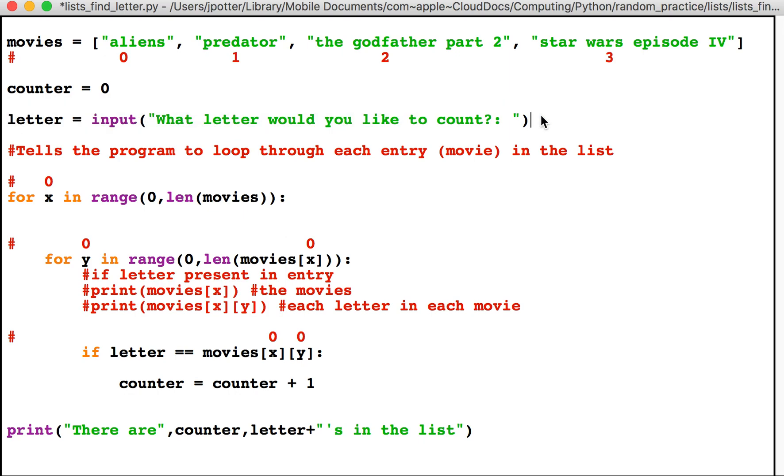Now we set up a loop here, and this goes from zero, index number zero which is 'aliens', to the end of the list which is 'star wars episode three'. So run and it will look at all of these. Now we've got a second list here.